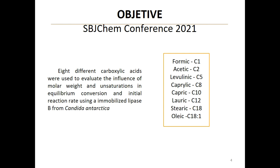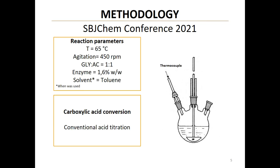The acids used were formic, acetic, levulinic, caprylic, capric, lauric, stearic, and oleic. Reactions were carried out in an isothermal reactor at 65°C with a mechanical stirrer at 450 rpm. The initial molar ratio between reagents was 1 to 1 and the enzyme concentration was 1.6%. When solvent was used, the system was diluted to 50% with toluene.